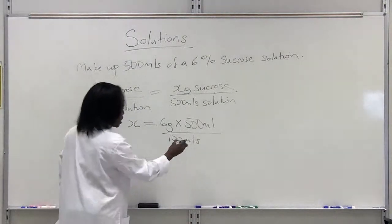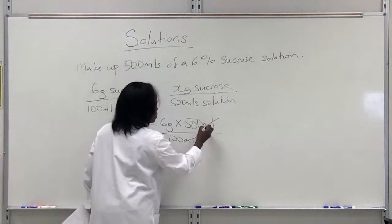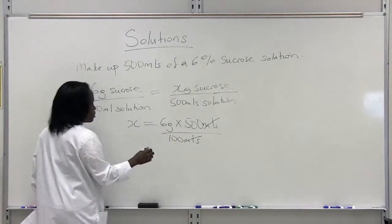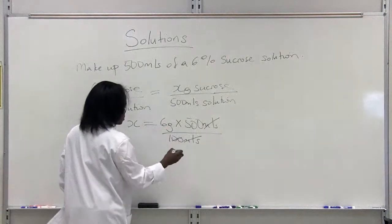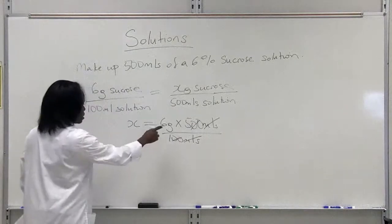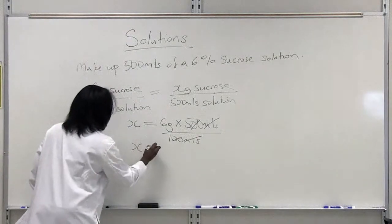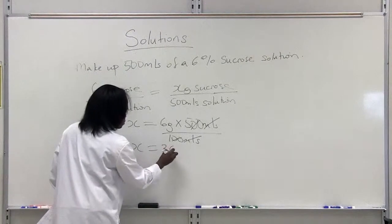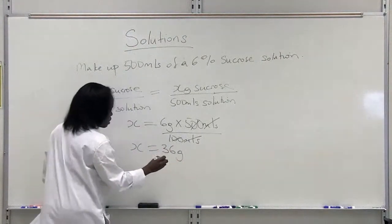It's going to be 6 grams multiplied by 500 mls divided by 100 mls of solution. If you notice, the volumes cross out, so whatever is left will be in grams. Therefore, x equals 30 grams of sucrose.